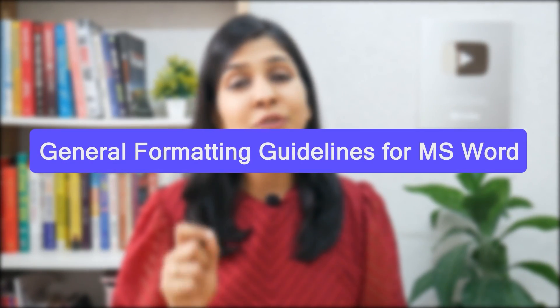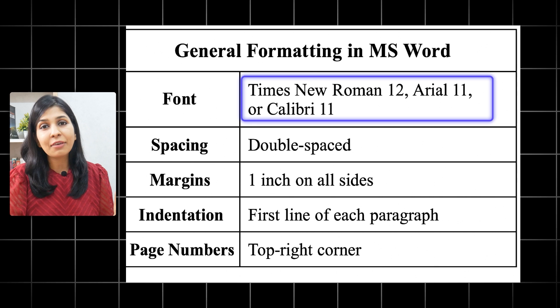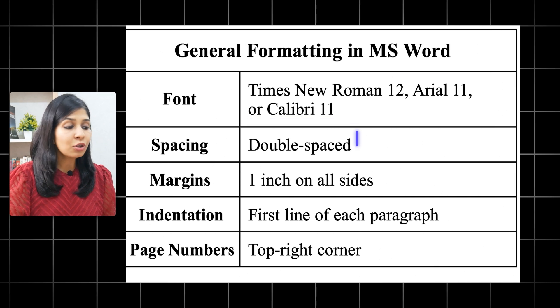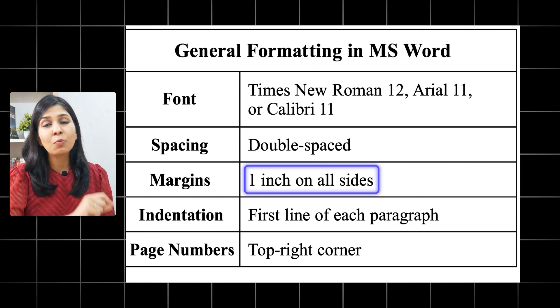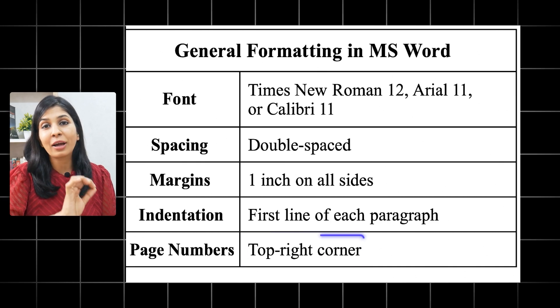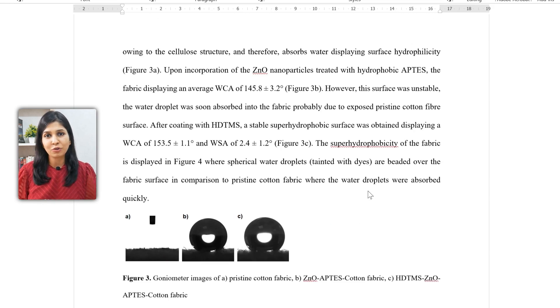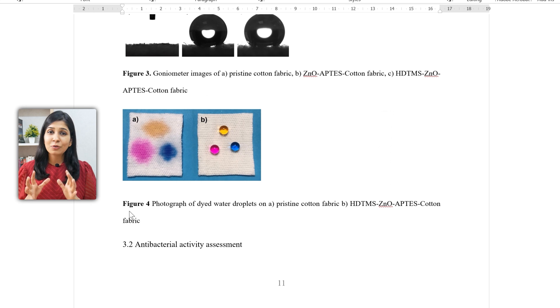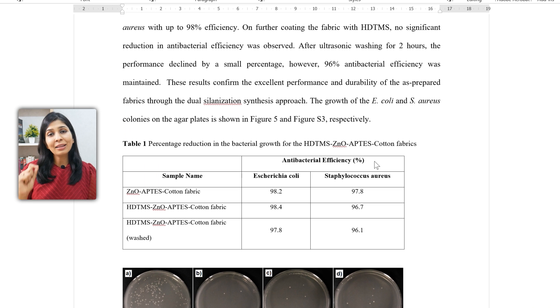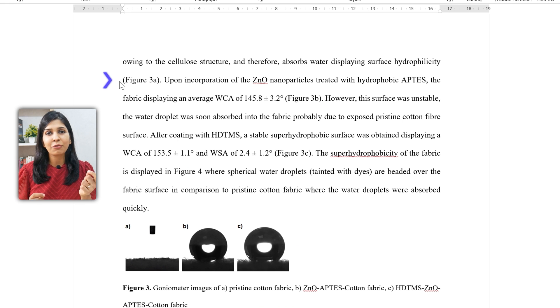Since Latex automatically does the formatting, let's talk about the general formatting guidelines for MS Word. You can go with the font Times New Roman with 12 font size, Arial with 11 font size, or Calibri with 11 font size. Spacing should be double-spaced, margins should be 1 inch on all sides, and the first line of each paragraph should be indented with page numbers at the top right corner. When it comes to figures and tables, you can add them close to the paragraph where you first mention them, and later upload high quality versions on the journal website. As a rule of thumb, captions for figures are mentioned below them and those for tables are mentioned above. Make sure to number your figures and tables correctly and cross-reference them in the main text.